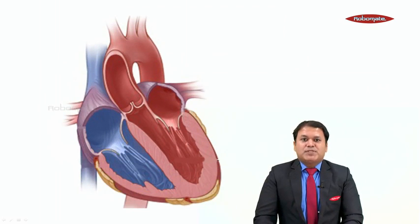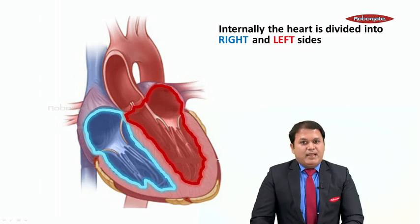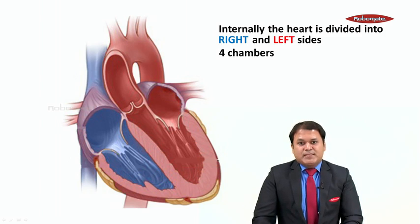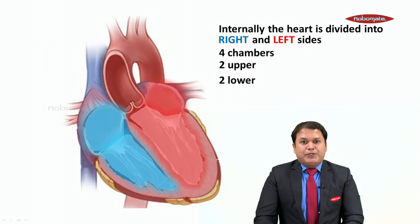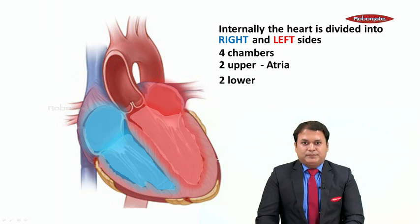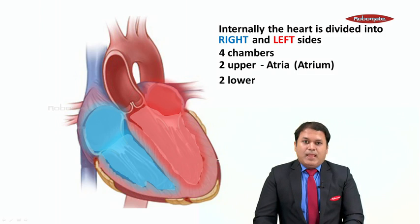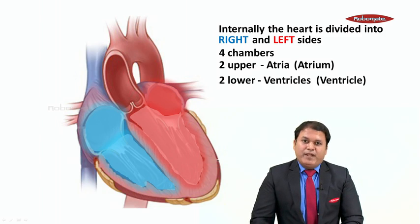Now let us study the internal structure of the heart. Internally, the heart is divided into a right side and a left side, and in all there are four chambers inside the heart. There are two upper chambers and two lower chambers. The upper chambers of the heart are called atria — singular atrium, plural atria — and the lower chambers of the heart are called ventricles, singular ventricle.